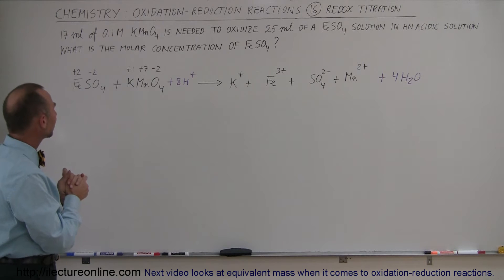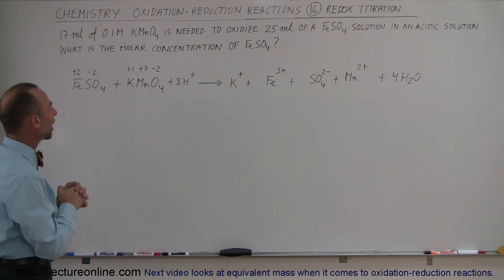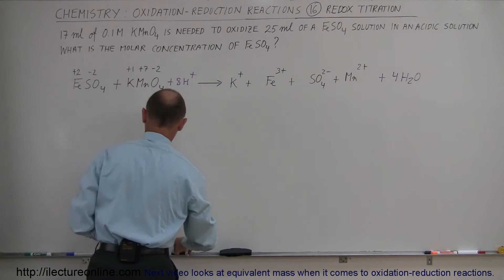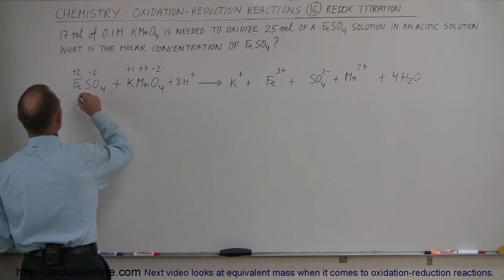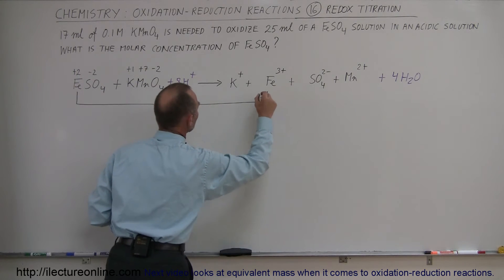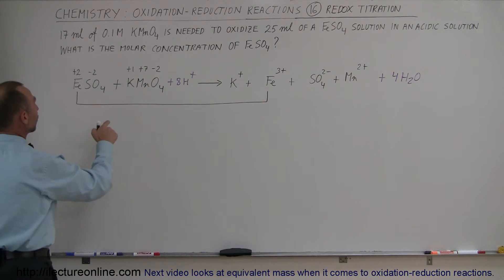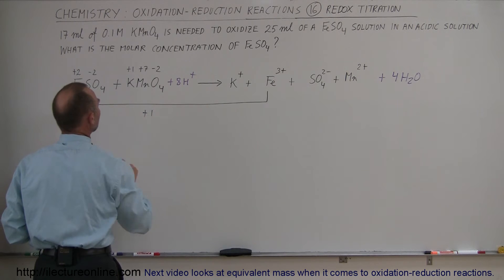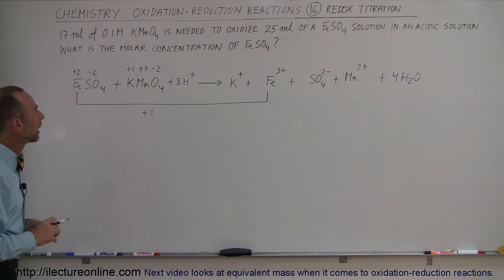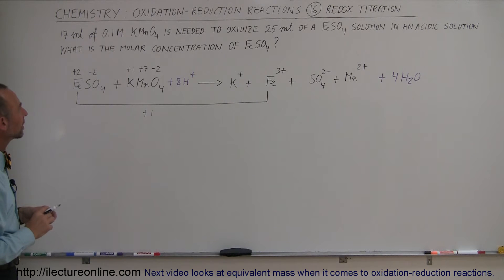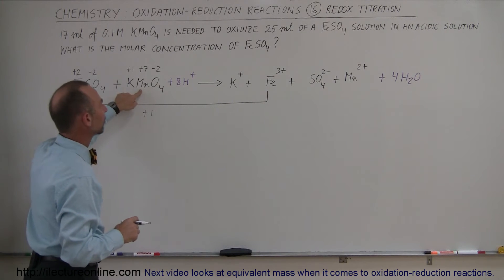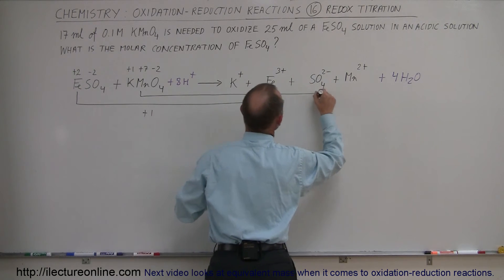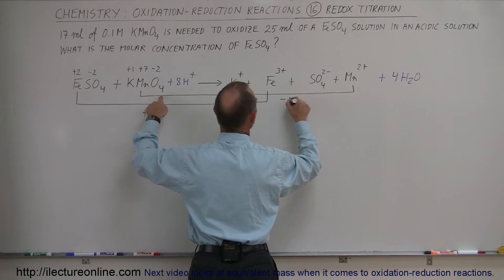Now let's take a look and see which atoms are being reduced and which atoms are being oxidized. You can see that iron starts at 2+ and becomes 3+, so the iron is being oxidized — that's a change of plus 1. On the other hand, we have manganese at plus 7 here, and manganese at plus 2 here, so manganese is being reduced, and we can say that's a minus 5 for the manganese.